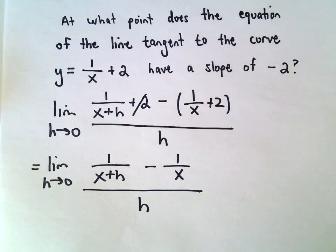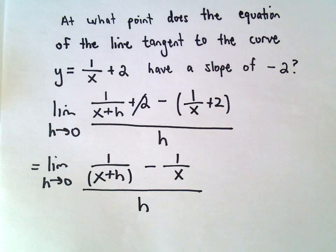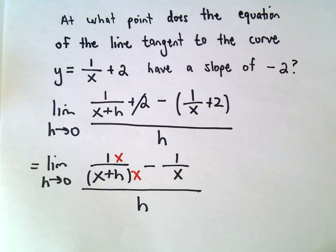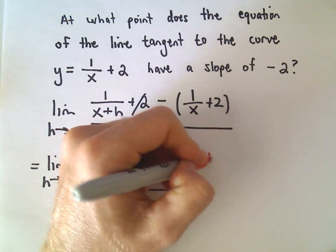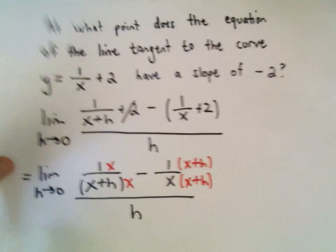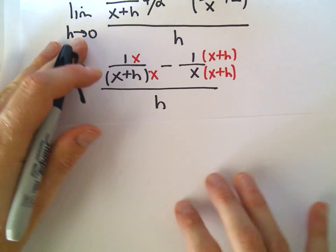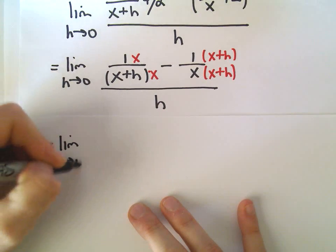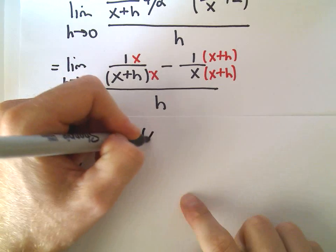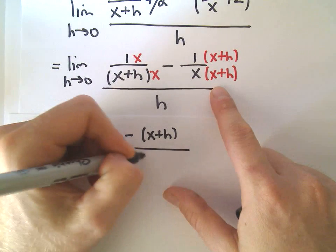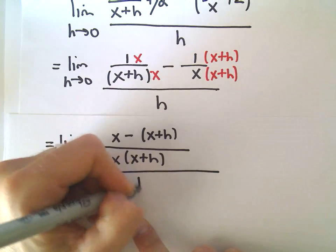Notice we can cancel out the 2's when we expand things — the plus 2 and the minus 2 cancel — leaving us with 1 over x plus h minus 1 over x, all over h. Then, similar to the last example, we get common denominators by multiplying the top and bottom of the first fraction by x, and the top and bottom of the second fraction by x plus h.